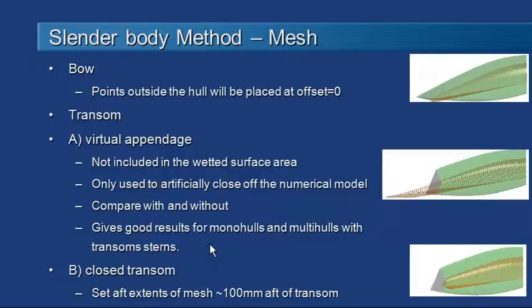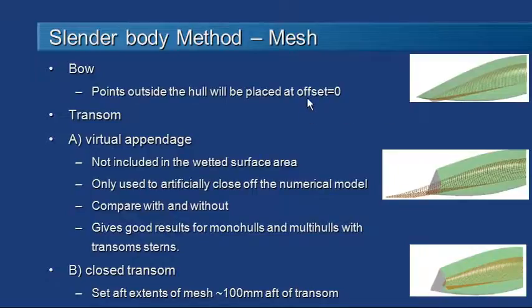If we look at the mesh itself there are really three parts that are interesting. Looking at the bow first, the mesh is essentially projected onto the hull transversely. Any points that fall off the boundaries of the hull are projected onto the centre line at an offset of zero. So the mesh is projected on, wraps around the hull, and then lies at an offset of zero on the centre line.